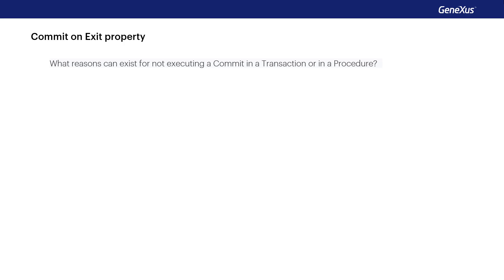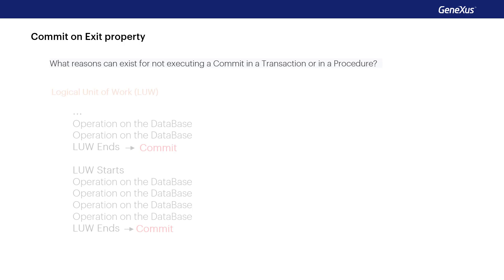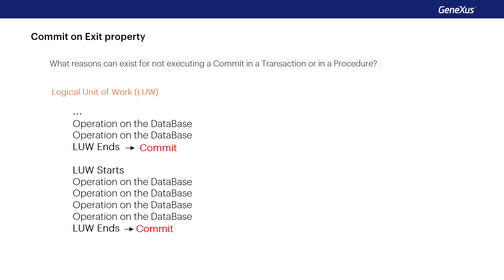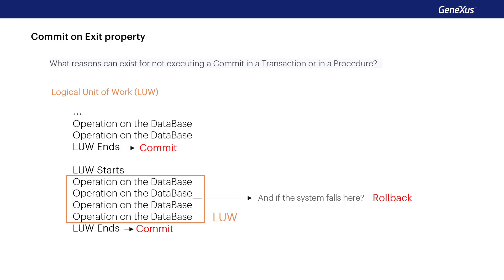What may be the reasons for not executing a commit in a transaction or procedure? One reason is to customize a logical unit of work (LUW). This means it may be necessary to expand an LUW so that several procedures or transactions with one or more procedures form a single logical unit of work, requiring the commit to cover all of them.